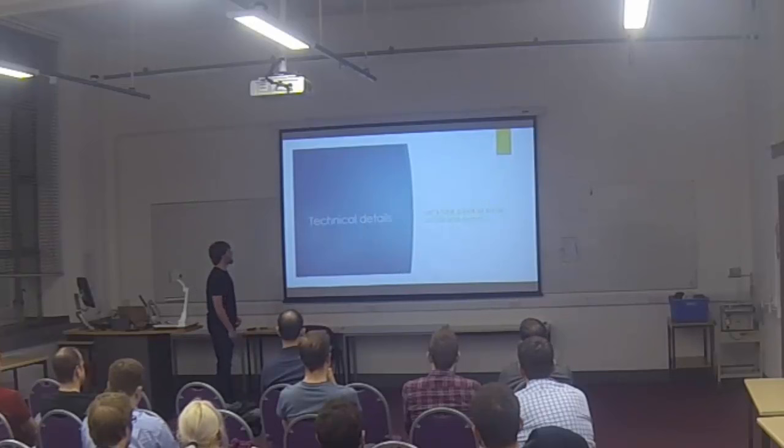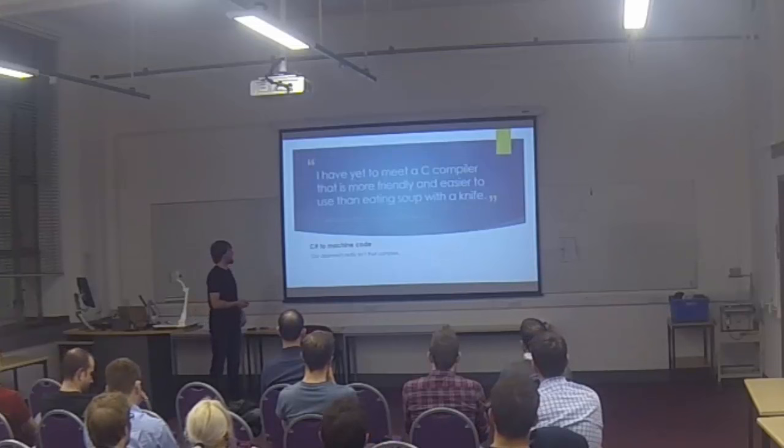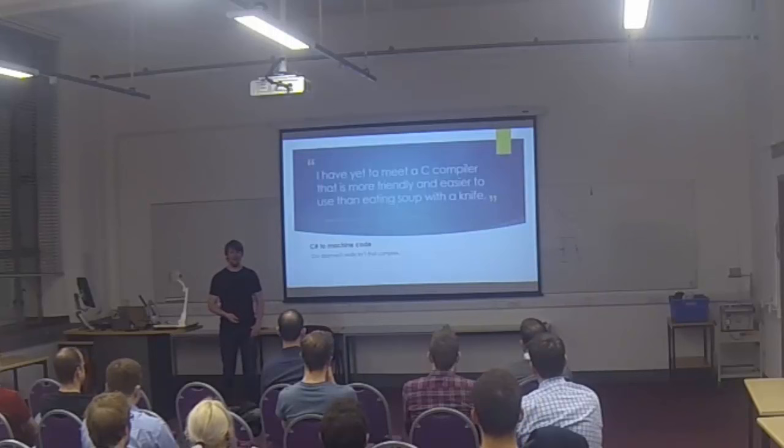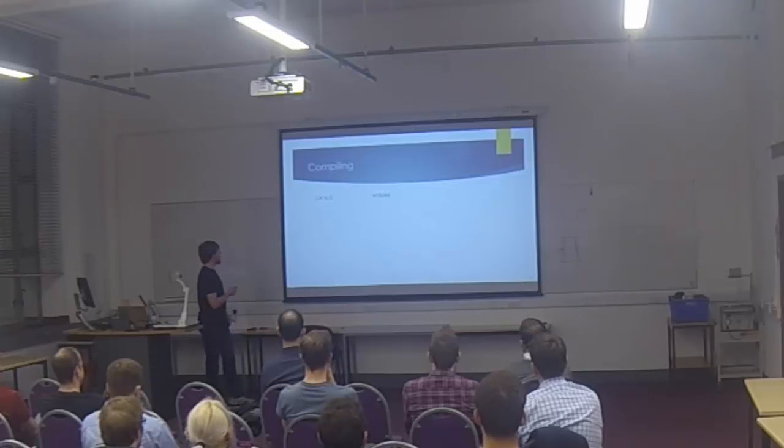So, technical detail. Our compiler — I've yet to meet a C compiler that is more friendly and easier to use than eating soup with a knife. Our compiler is nothing like that complex. We use MSBuild, or XBuild which is Mono's version, to compile C# into intermediate language. Notably, you could also do this in VB.NET or F# or some variants of C++ that Microsoft offer — so it's not just restricted to C#, but we prefer C#.